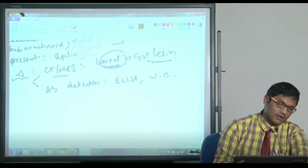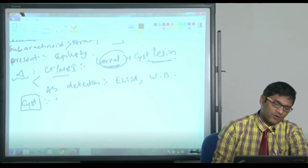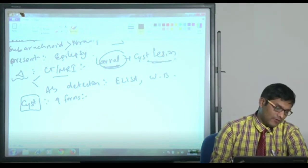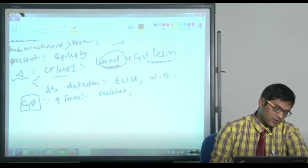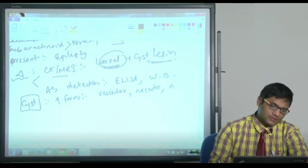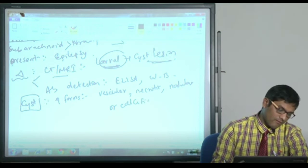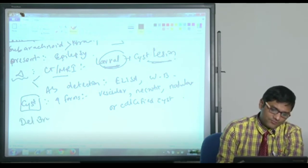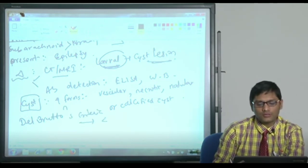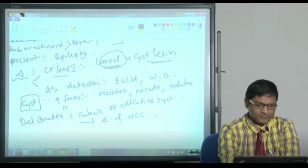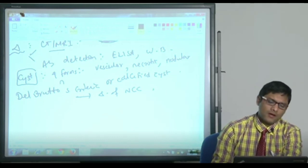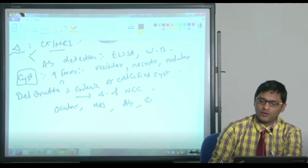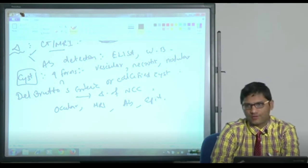They say that the cyst exists in four types of morphological forms. Larval form in the brain and other areas exist in four forms: either vesicular cysts, necrotic cysts, nodular cysts, or calcified cysts. There is a criteria called Del Bruto's criteria, used for diagnosis of neurocysticercosis. It takes various features into account like ocular features, MRI features, antibodies, epidemiological features - various parameters are taken into account.